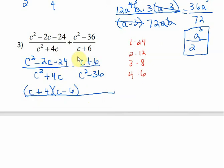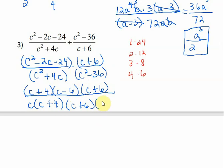And then I need to bring down this C plus 6. Down here, how would I factor that? Factor out a C. So I'm left with C plus 4. And then this is a difference of perfect squares. C plus 6, C minus 6. Now's the fun part. We get to cancel out. C plus 4, C plus 4. C minus 6, C minus 6. C plus 6, C plus 6. So my answer is 1 over C.